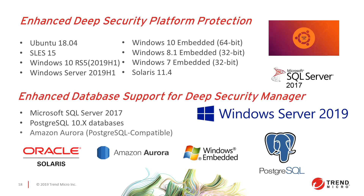The last new extended platform support features for Deep Security 12 include newly supported operating systems: Ubuntu 18.04, Windows Server 2019, Windows 10 Embedded 64-bit, Windows 8.1 Embedded 32-bit, Windows 7 Embedded 32-bit, and Solaris 11.4. We've also extended database platform support — you can now use SQL Server 2017, Postgres 10.x, or Amazon Aurora Postgres compatible as your Deep Security Manager database. SQL Server 2017 support has been available since Deep Security 11.2, so if you're on that feature release or newer, you already have that support available.